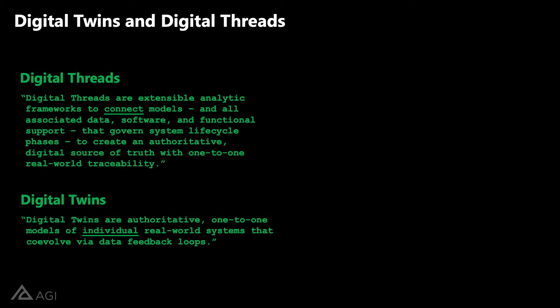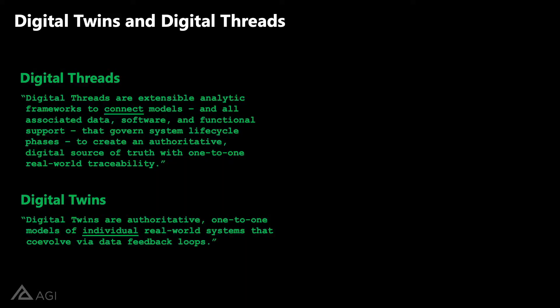A digital twin, on the other hand, is literally a one-for-one matchup — a digital version of some physical reality. So for a spacecraft, a constellation of spacecraft, or a fleet of aircraft, there would be a digital twin of a particular tail number. That's all of the models representing that particular system, with a constant feedback loop of real data from the real system that's constantly maturing that data. Many times that digital twin is built on a foundation of these digital threads.